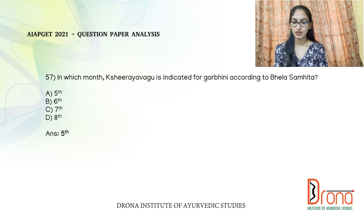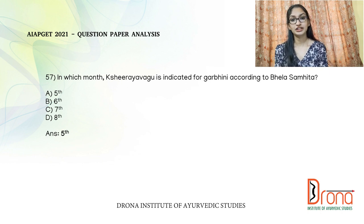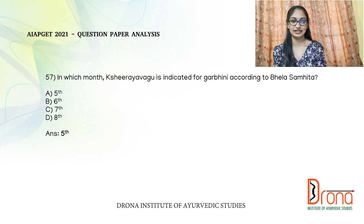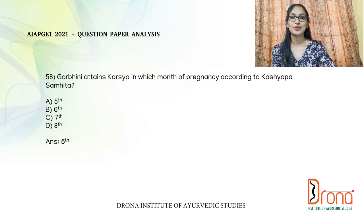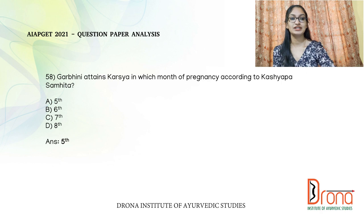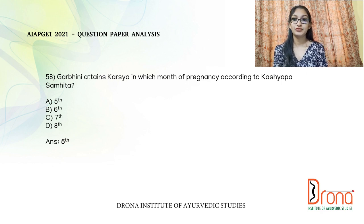The next question: in which month is Kshira Yavagu indicated for garbhini according to Bela Samhita? In Bela Samhita, in the fourth month of garbhini, Kshira Navanitam is indicated; in the fifth month, Kshira Yavagu is indicated; and in the sixth month, Kshira Sarpi is indicated. So Kshira Yavagu is indicated for garbhini in the fifth month.